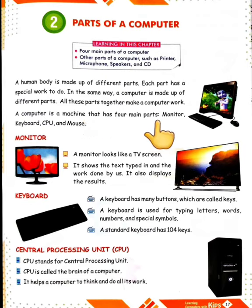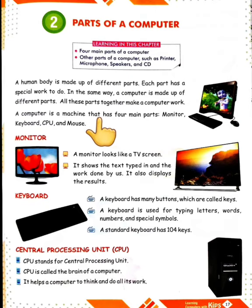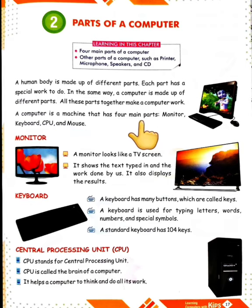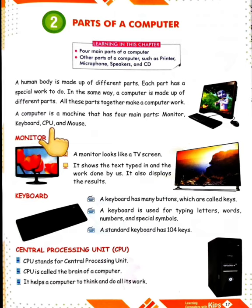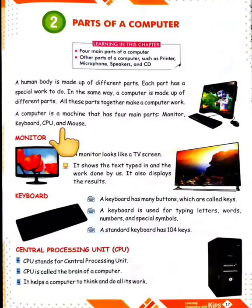A computer is a machine that has four main parts. These parts are monitor, keyboard, CPU, and mouse. Let's read about these four main parts one by one.